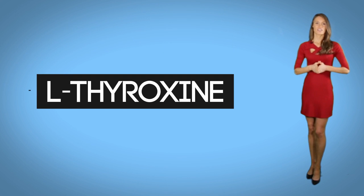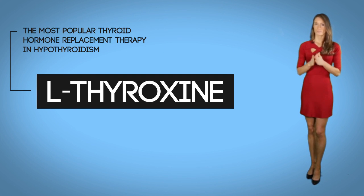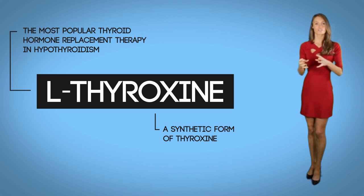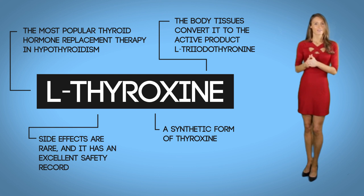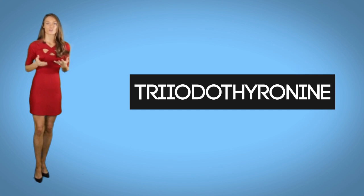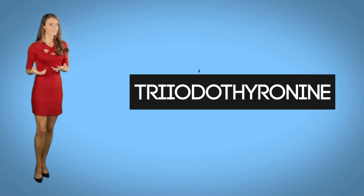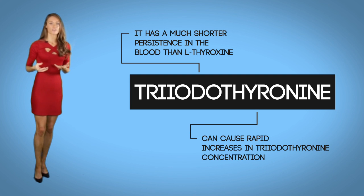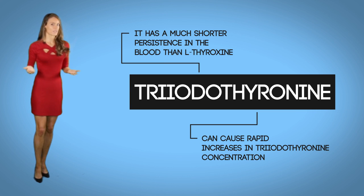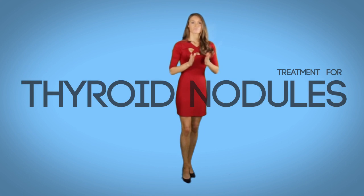The treatment for hypothyroidism is L-thyroxine, the most popular thyroid hormone replacement therapy. This is the synthetic form of thyroxine — essentially the same hormone the thyroid makes. The body tissue converts it to the active product L-triiodothyronine. Side effects are rare and it has an excellent safety record. Triiodothyronine (T3) is rarely used alone as thyroid hormone replacement because it has a much shorter persistence in the blood, and can cause rapid T3 concentration increases, which can be dangerous in the elderly and in people with cardiac disease.